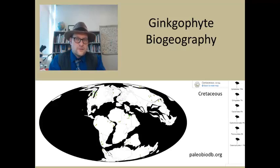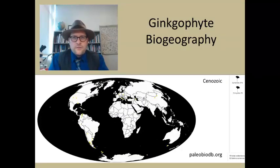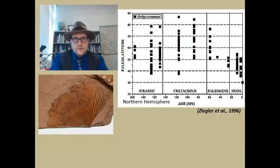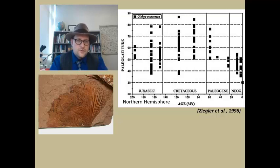During the Cretaceous, the number of ginkgo-bearing sites drops dramatically, but they still have a global extent. Much of the drop in abundance may be a factor of the rise of angiosperms — the flowering plants — with which ginkgos had to compete. During the Cenozoic, ginkgos become very rare in the fossil record and are only found in a few sites, but are present in North America up into the Miocene. Ginkgos become more restricted in their geography with the global cooling during the late Cenozoic. During warm climates in the early Cenozoic and back in the Cretaceous and Jurassic, fossil ginkgos lived at high paleolatitudes above the Arctic Circle, but with cooling temperatures during the age of ice, they have a more restricted geographic range, with a single naturally occurring forest today in China.